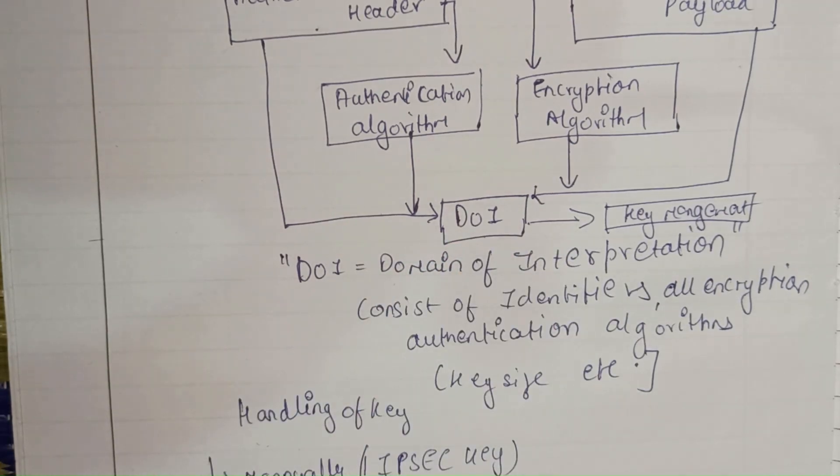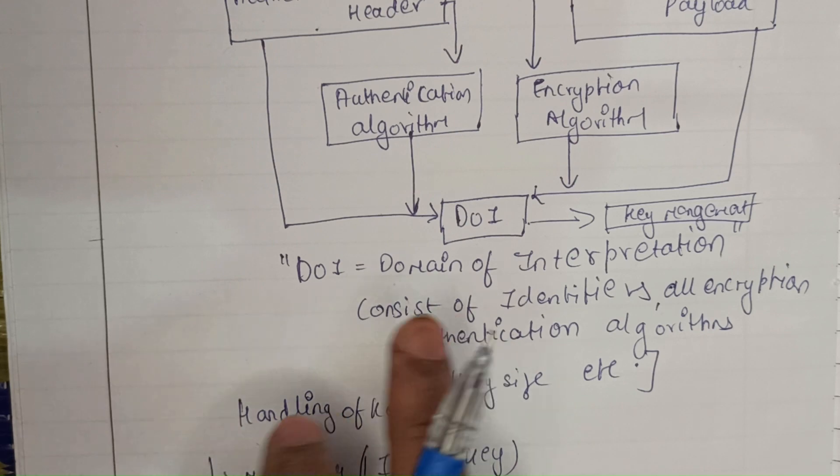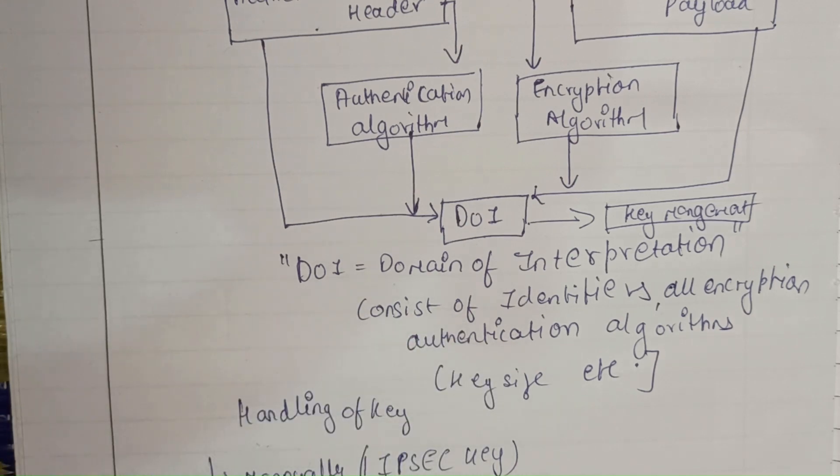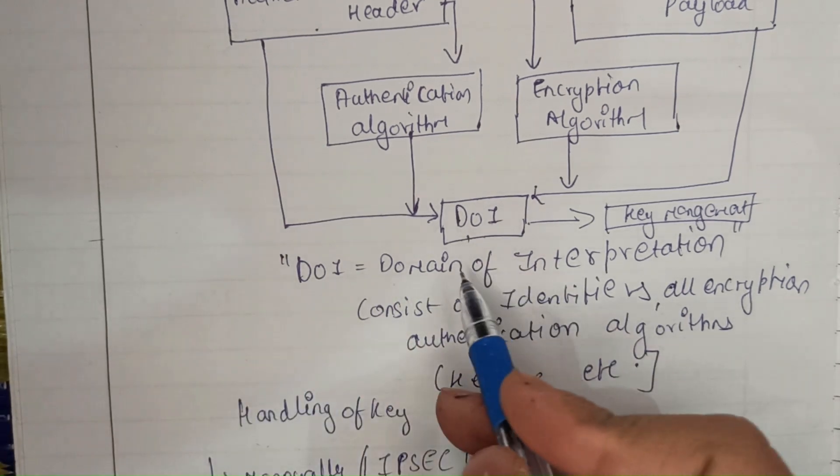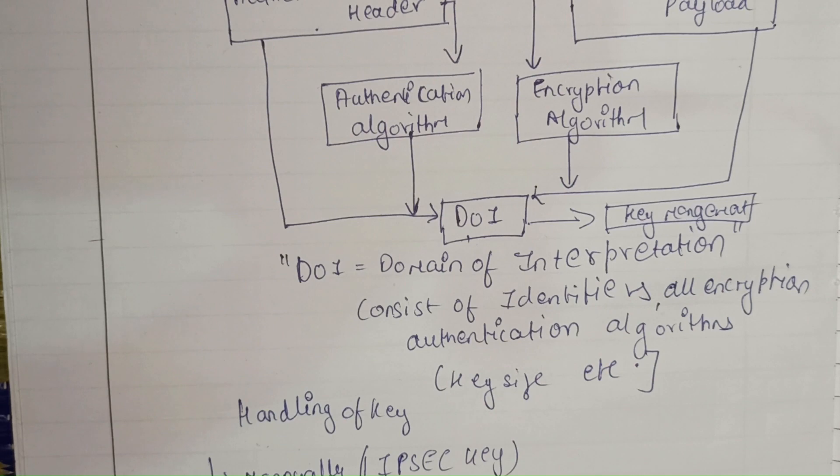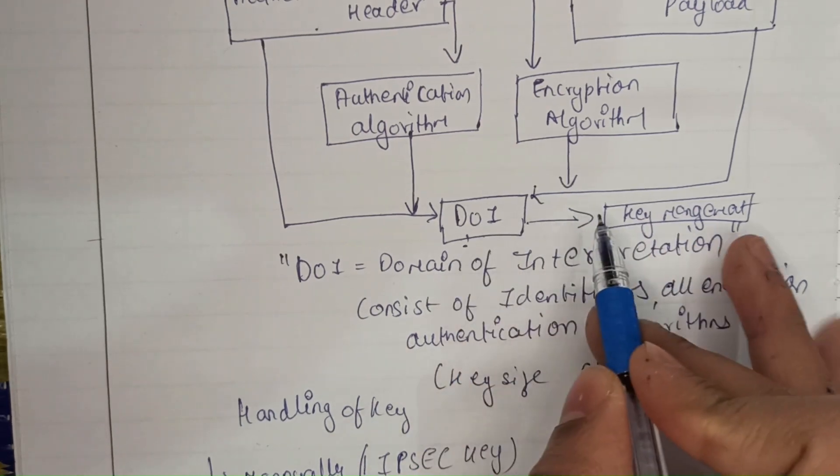It consists of all the identifiers whatever is required. It consists of all the encryption algorithms, it consists of all the authentication. So DOI is domain of interpretation and this domain of interpretation is connected to the key management.